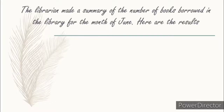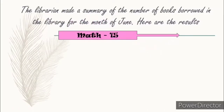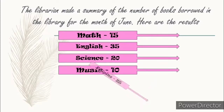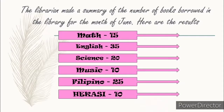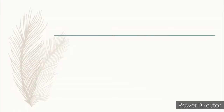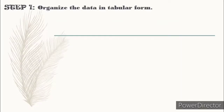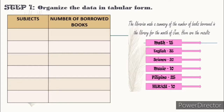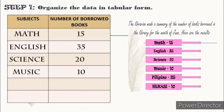The librarian made a summary of the number of books borrowed in the library for the month of June. Here are the results: Math — 15 books, English — 35 books, Science — 20 books, Music — 10 books, Filipino — 25 books, and Hikasi — 10 books. To easily understand the data, we can present them in graphical form. To do this, let's follow the steps. Step 1: Organize the data in tabular form, as we did earlier. We have subjects and the number of borrowed books: Math with 15, English with 35, Science with 20, Music with 10, Filipino with 25, and Hikasi with 10 books.